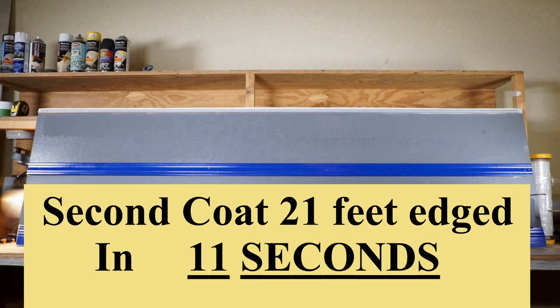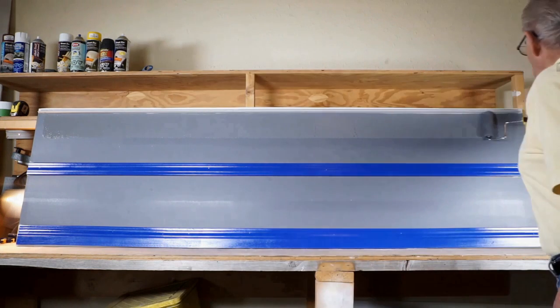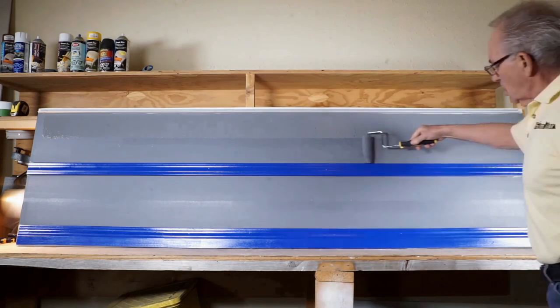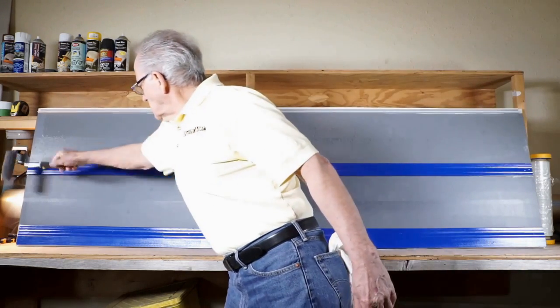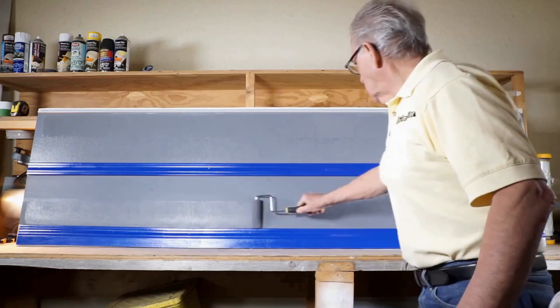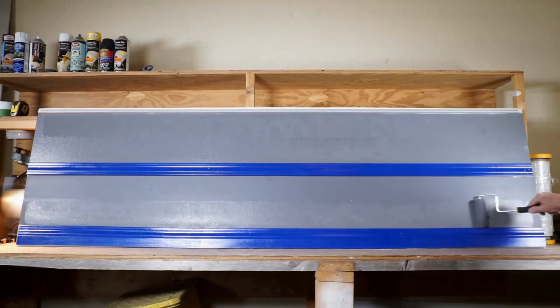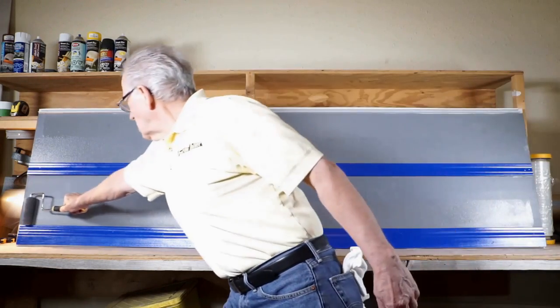So here is 21 feet on second coat edged in 11 seconds. That is a total of 35 seconds for both coats of paint. This would be the equivalent of painting around a double front entrance door 2 coats in a total of 35 seconds.